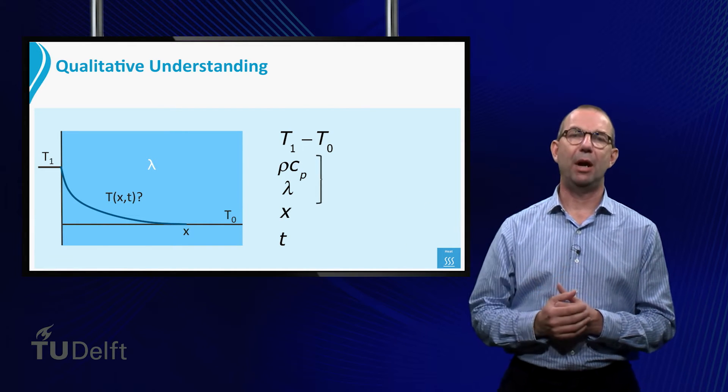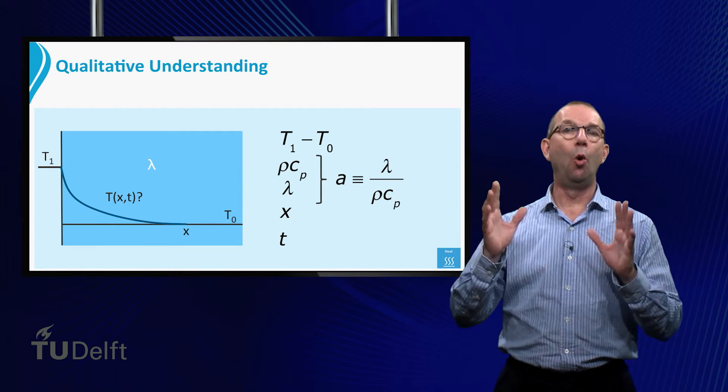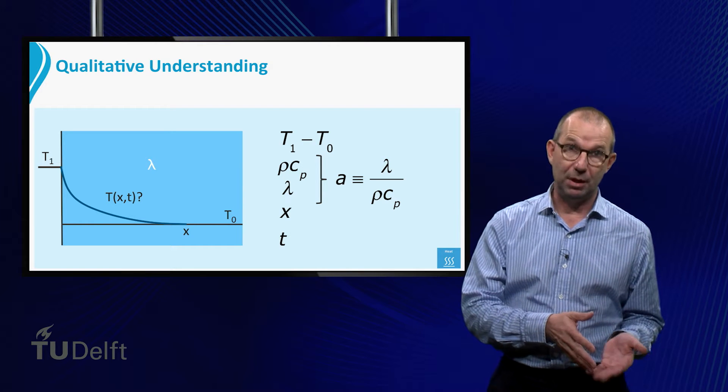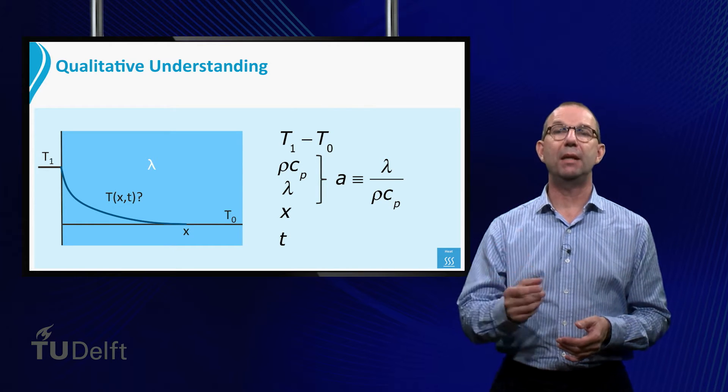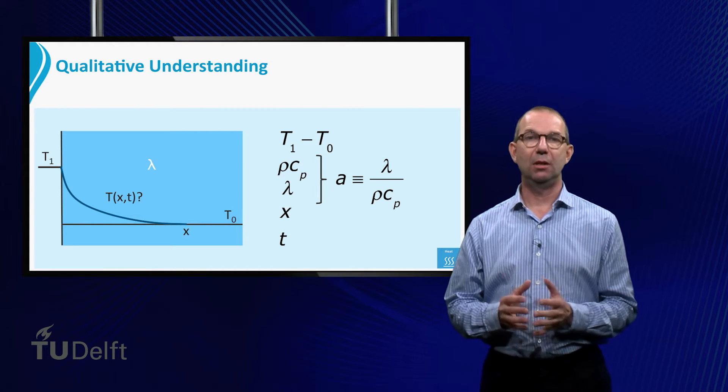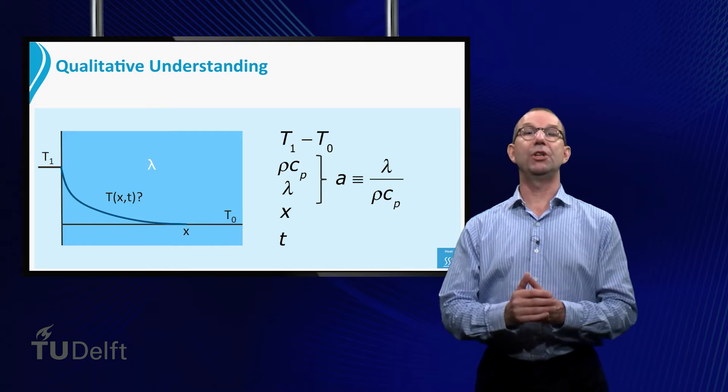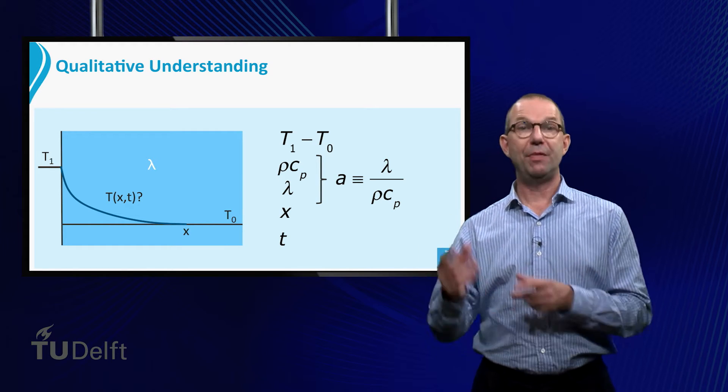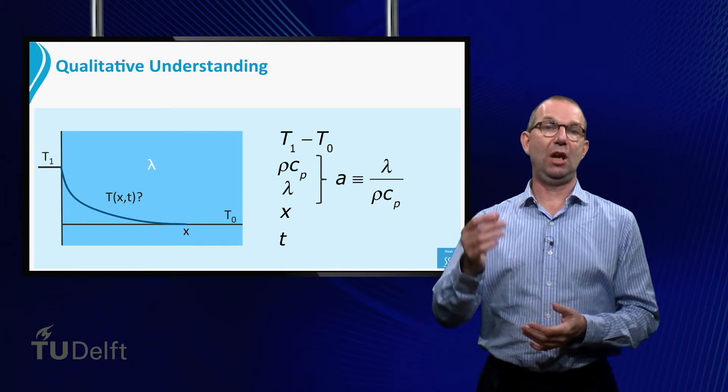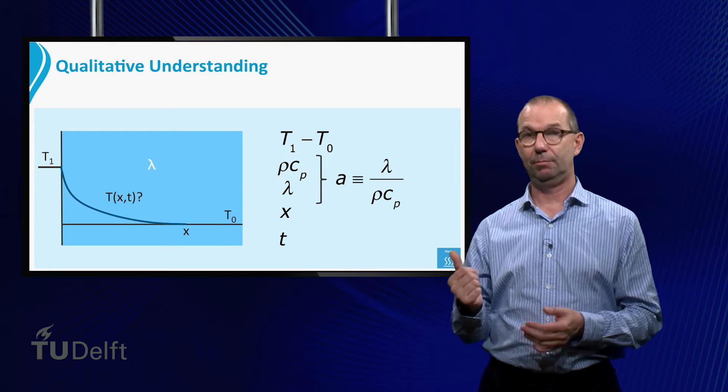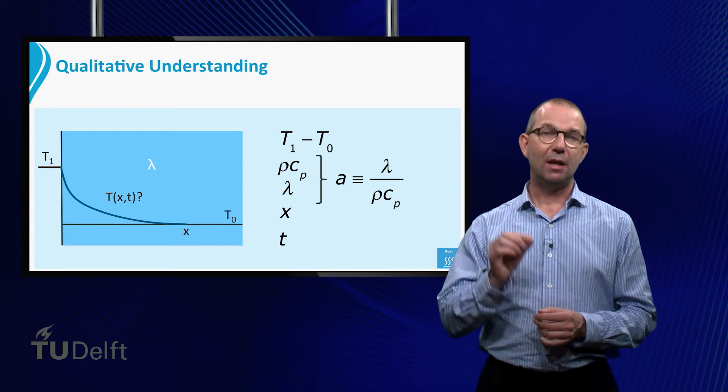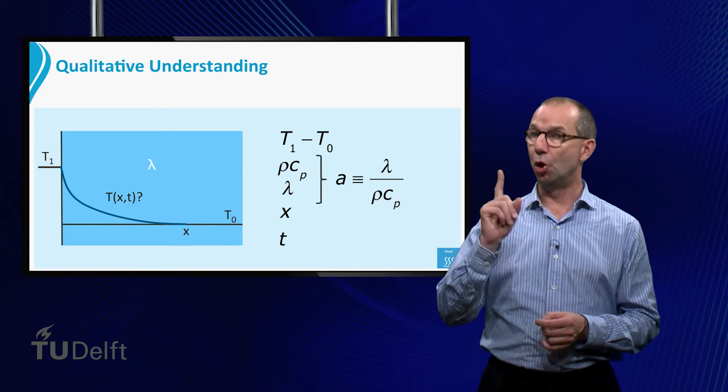It turns out that lambda and rho Cp always occur in a fixed combination, lambda divided by rho Cp. This is denoted by the letter A, and it is called the thermal diffusivity. Actually, it is much like the ordinary diffusion coefficient from Fick's law, but now for diffusion of heat. It even has the same units, meters squared per second as the diffusion coefficient. Do note, however, that it is lambda that needs to be used in Fourier's law, not A.